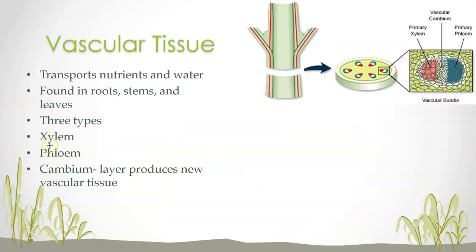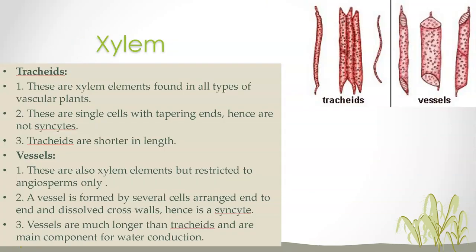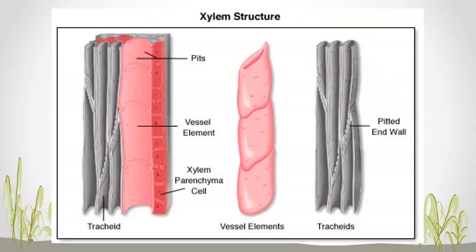Vascular tissue comes in three types: xylem carries water, phloem carries food, and the cambium produces new vascular tissue. Xylem has tracheids with tapered ends that are shorter in length. Xylem is found in all types of vascular plants, while vessels are only in angiosperms. A vessel is formed by several cells arranged end to end — it's wider. You can see tracheids tapering end to end, and vessels are like large tubes — straws — inside the plant.